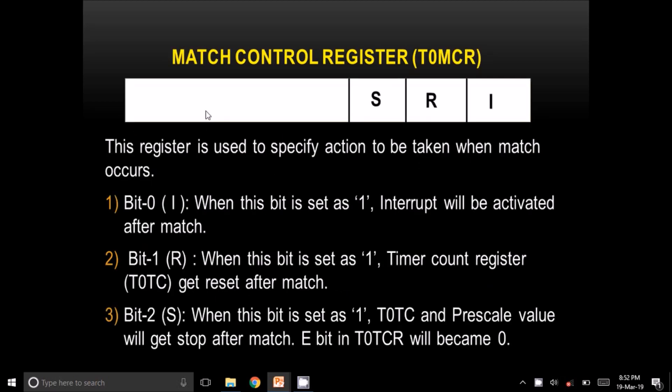The Match Control Register T0MCR is used to specify a certain action after a match occurs. It has three bits: I, R, and S. If the I bit is made 1, an interrupt will occur after the match. If the R bit is made 1, the T0TC value becomes 0 after the match. If the S bit is made 1, the T0TC and pre-scaler values will stop and the E bit in T0TCR will become 0.